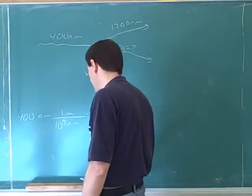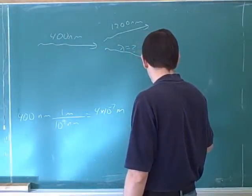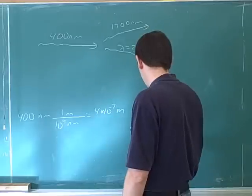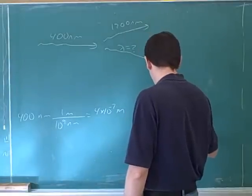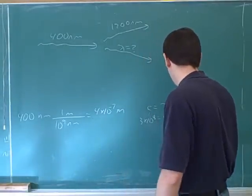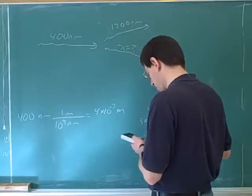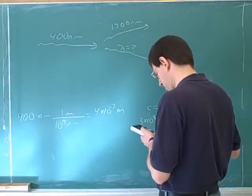C equals lambda nu. Right. And then so you would multiply that times the constant. So 7.5 times 10 to the 14th. Good.